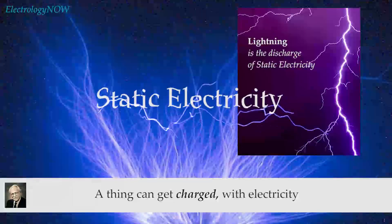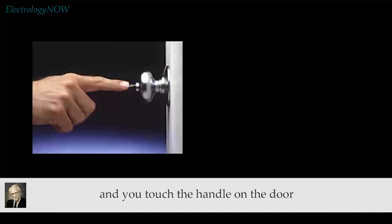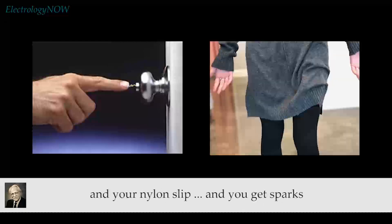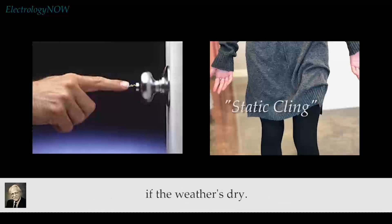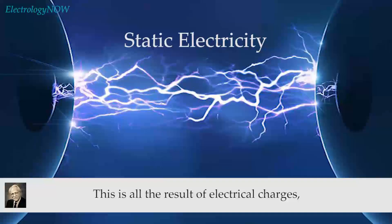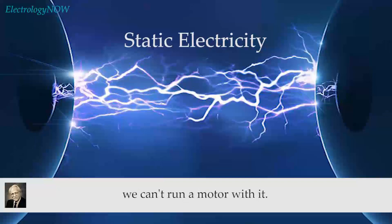A thing can get charged with electricity. For instance, when you slide across the seat of your automobile and you touch the handle on the door, you get a little shock. You take off your dress and the nylon slip and you get sparks if the weather's dry. You comb your hair and your hair all stands out. This is all the result of electrical charges, but we can't harness that kind of electricity to do anything. We can't put it to work. We can't run a motor with it.